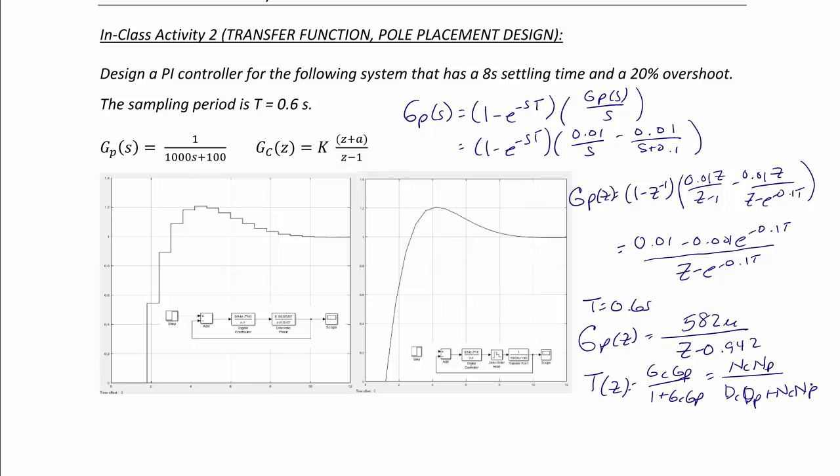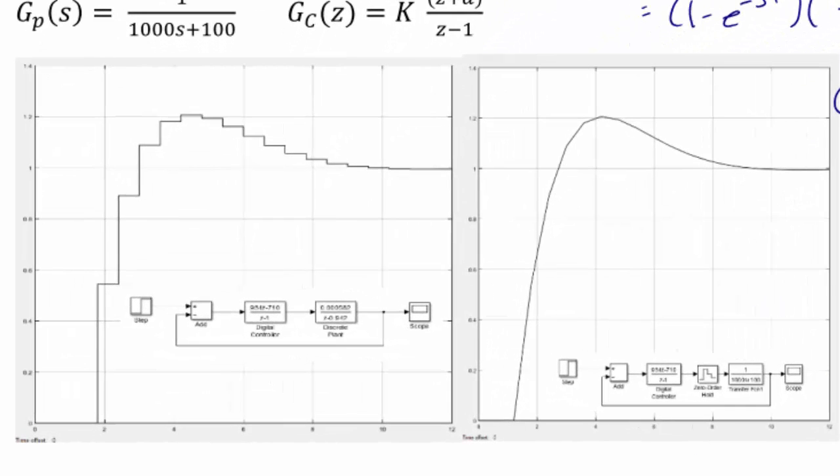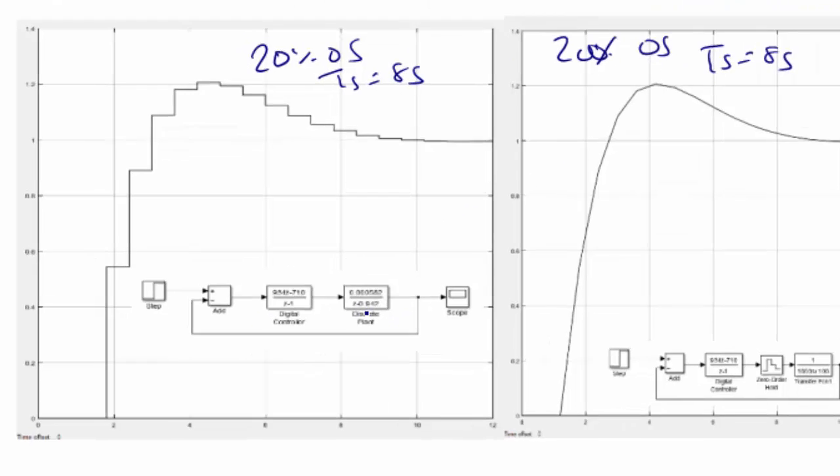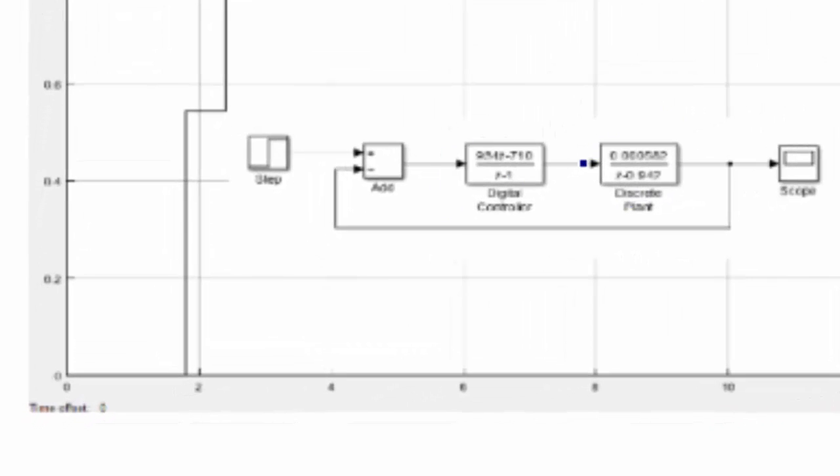So let's talk about what these two graphs are here. What these graphs are is for the compensated step response of our system. And what you should notice here is that they both have a 20% overshoot and they both have a settling time of 8 seconds. So what's the difference between the two?